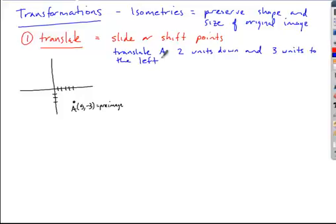This is one of the transformations - a shifting or sliding of points. All you're going to do when you identify this translated point is take the original value and move it two units down.